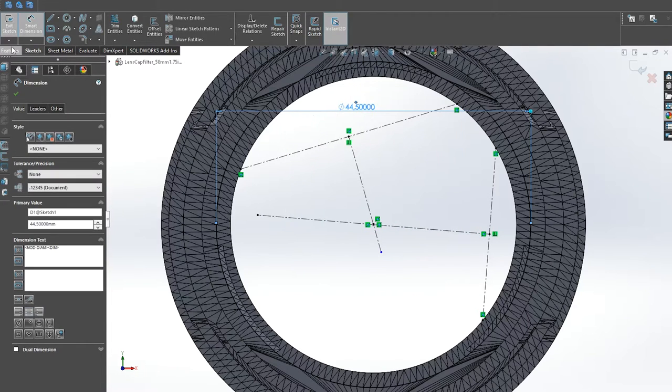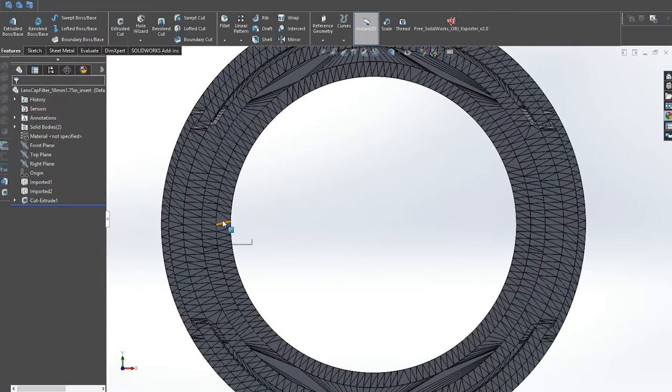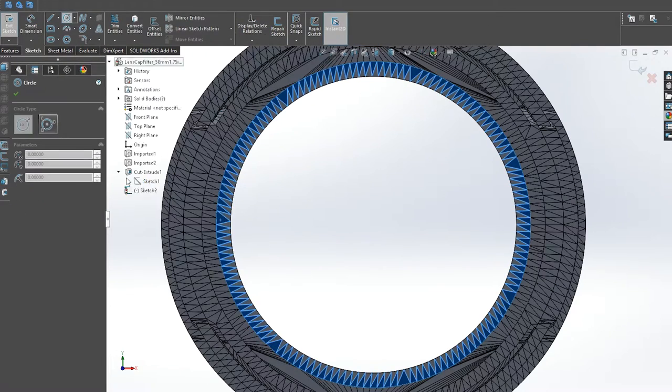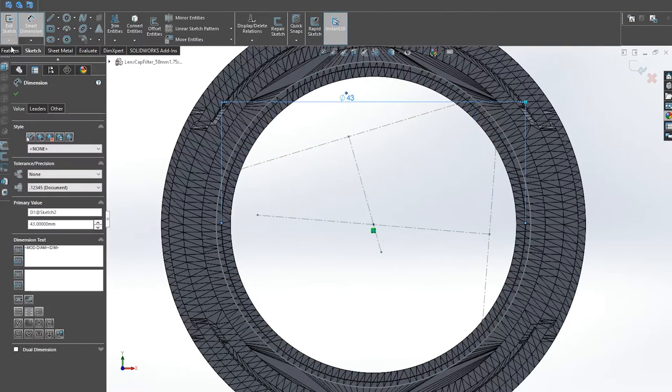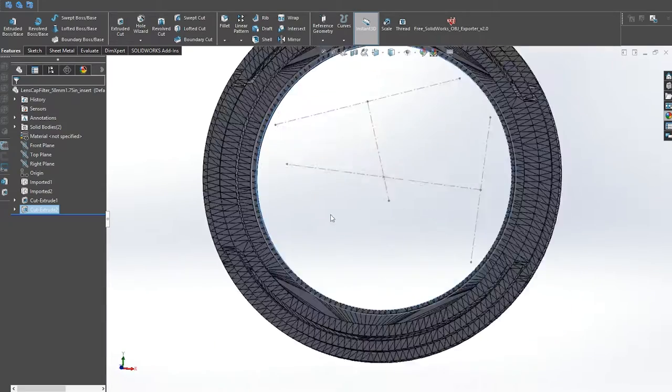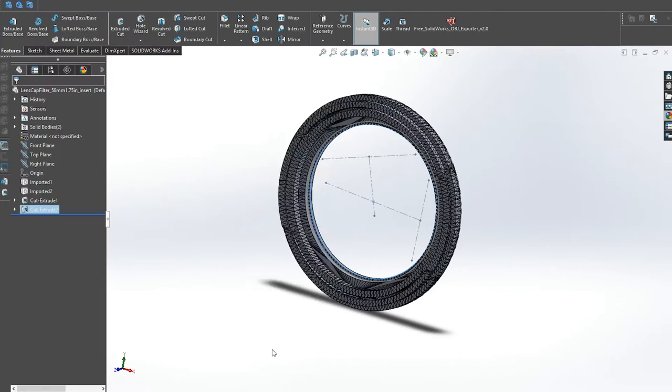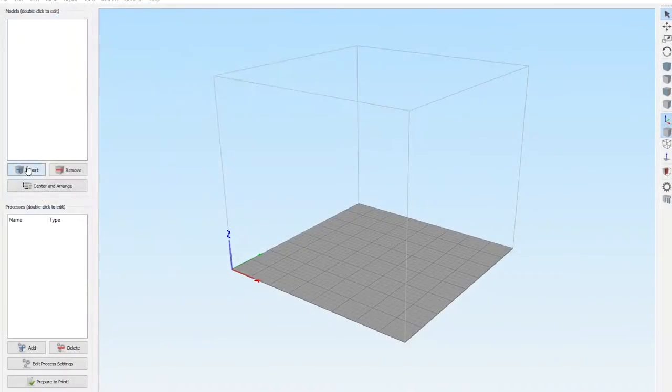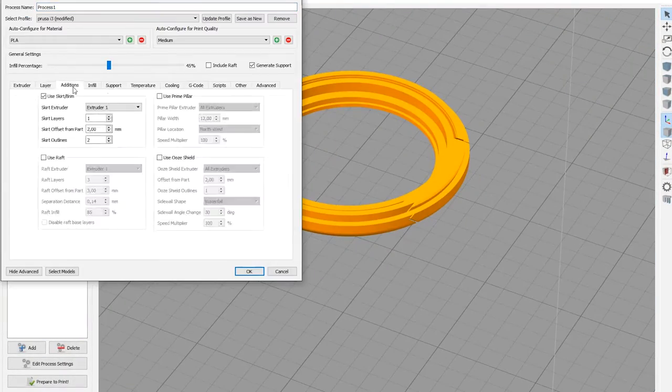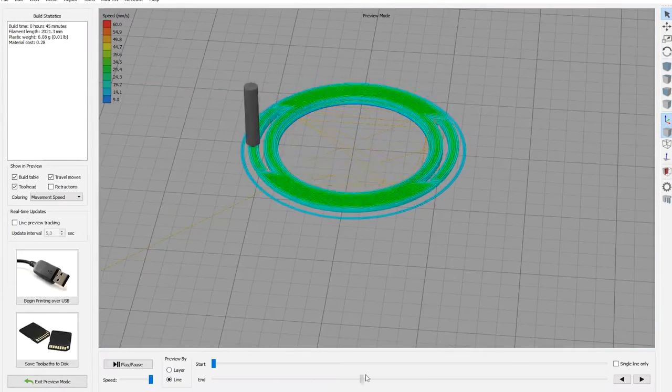In my case I ordered a 44.5mm lens so I made that inner diameter same size for a snug fit. The surface area of the lens is preferred to be as big as possible so I leave 1mm on each side to prevent the lens from falling out of the adapter. Now slice it in any slicing software and print it at 0.2mm layer height.